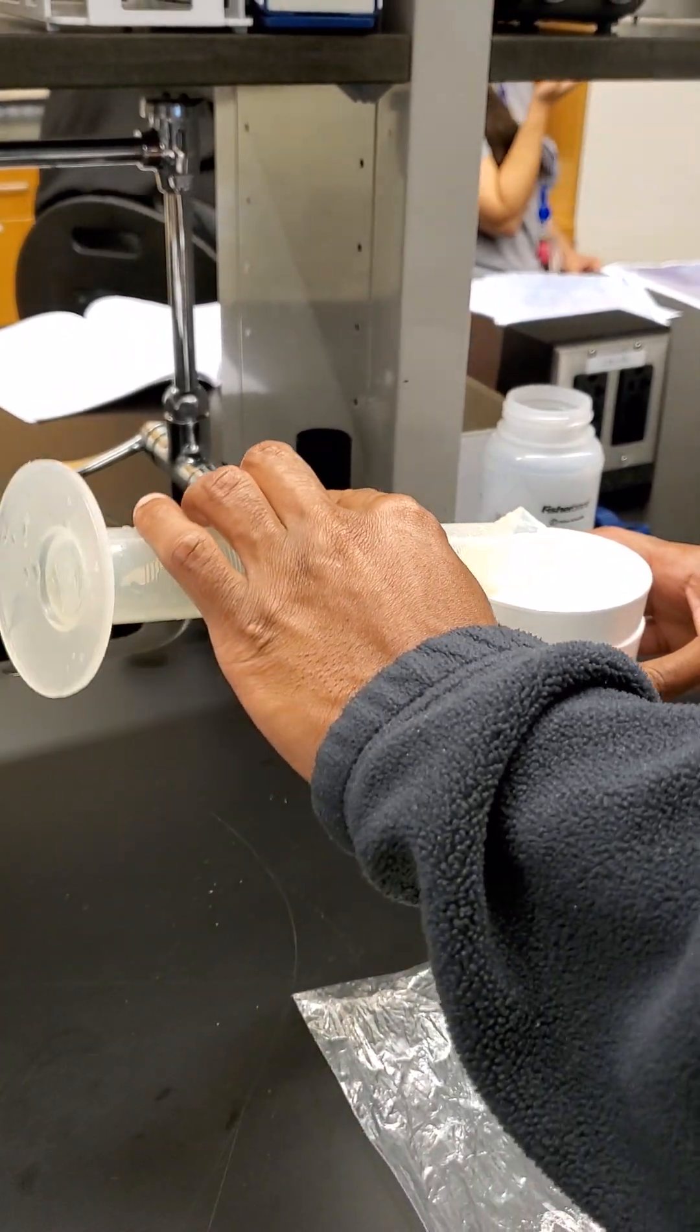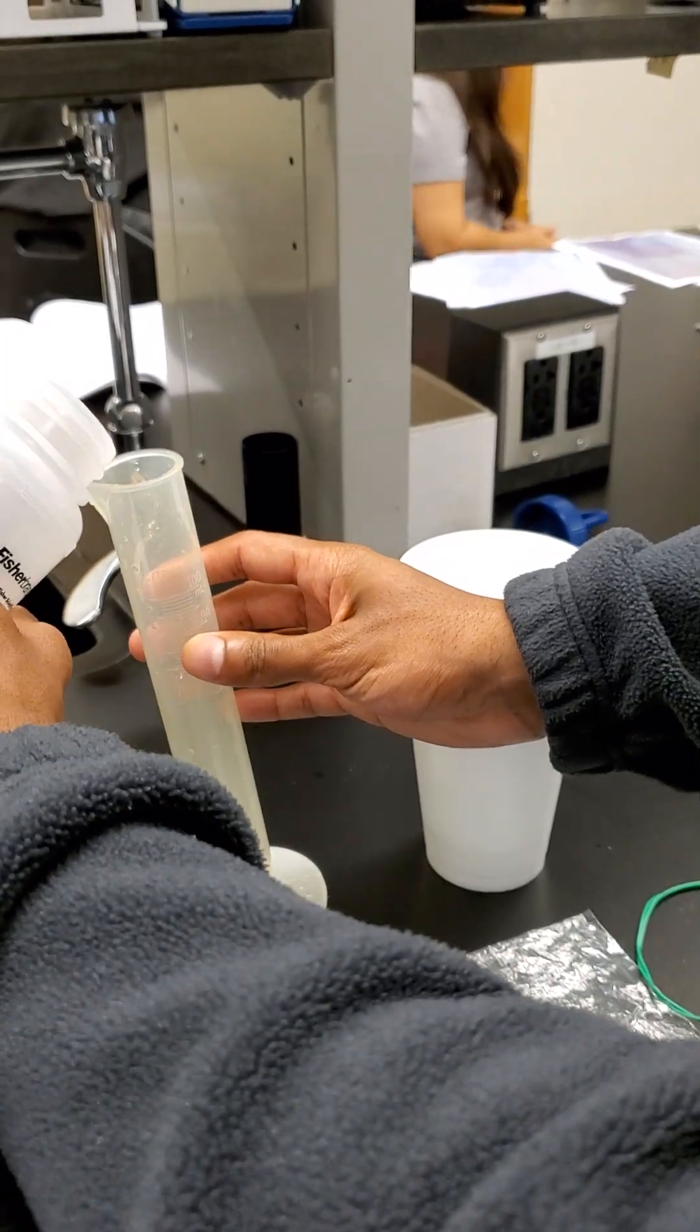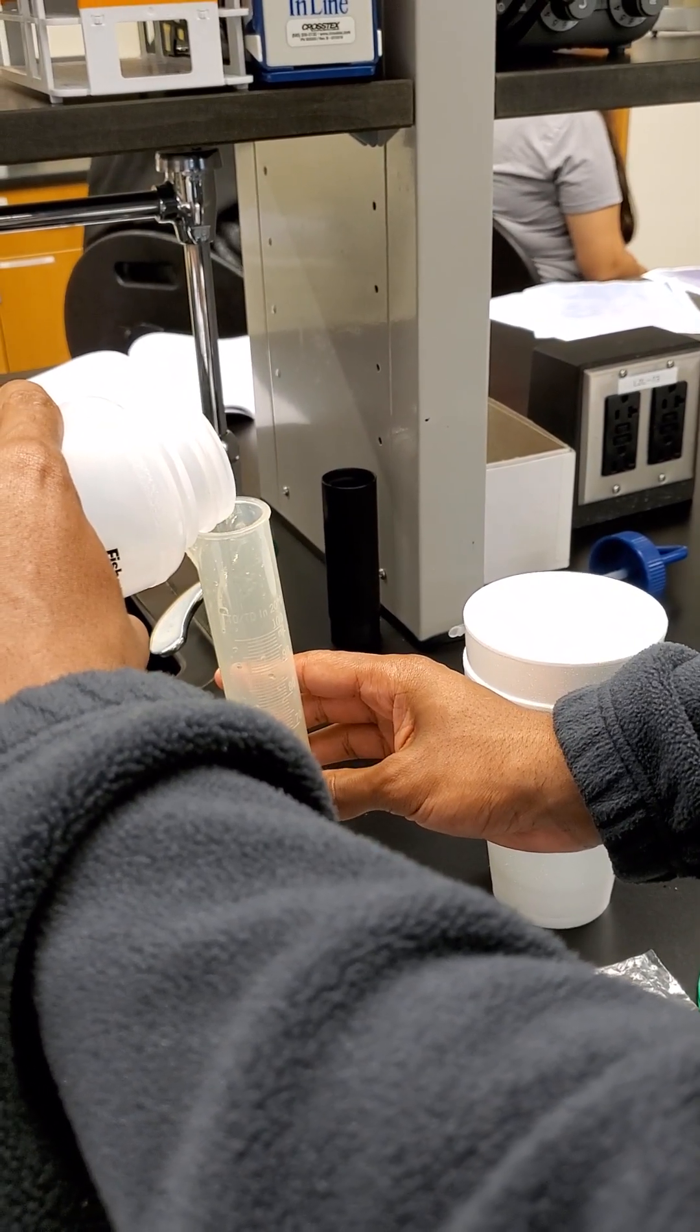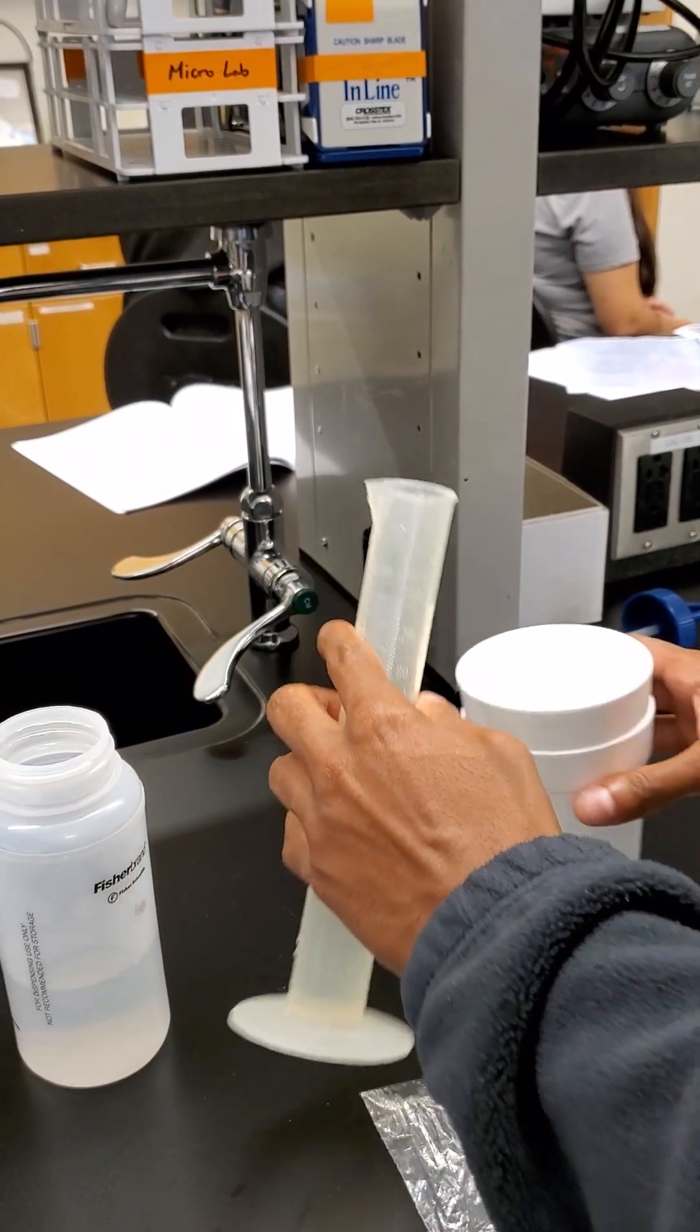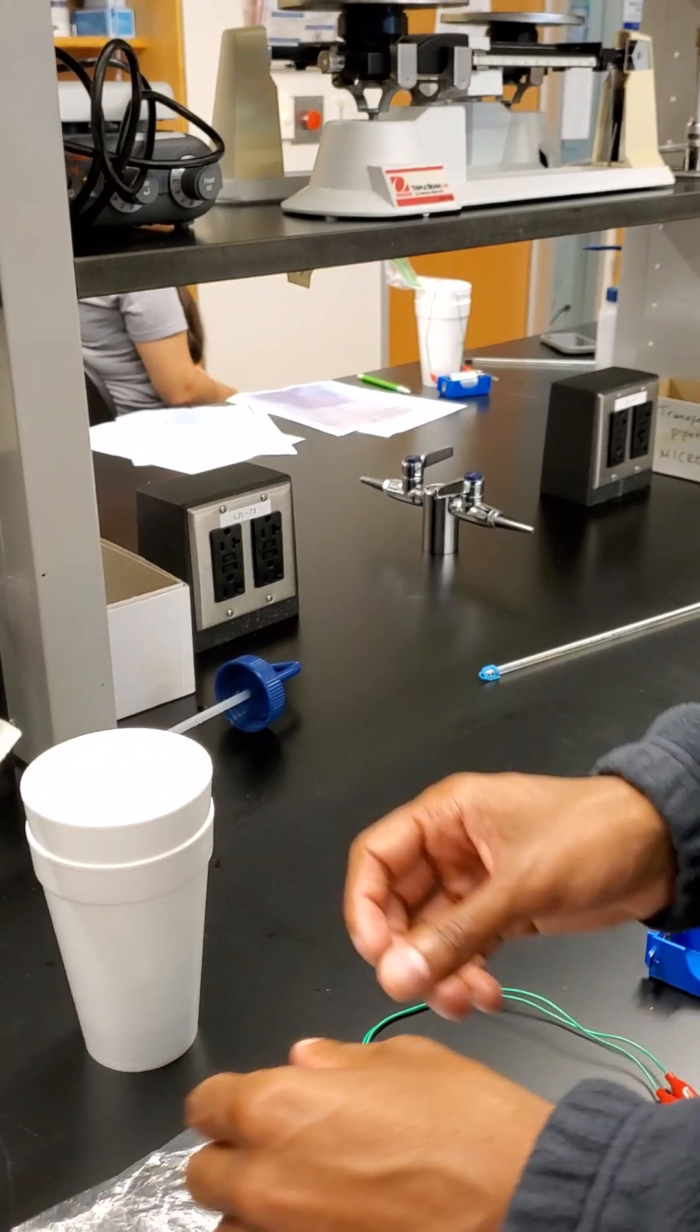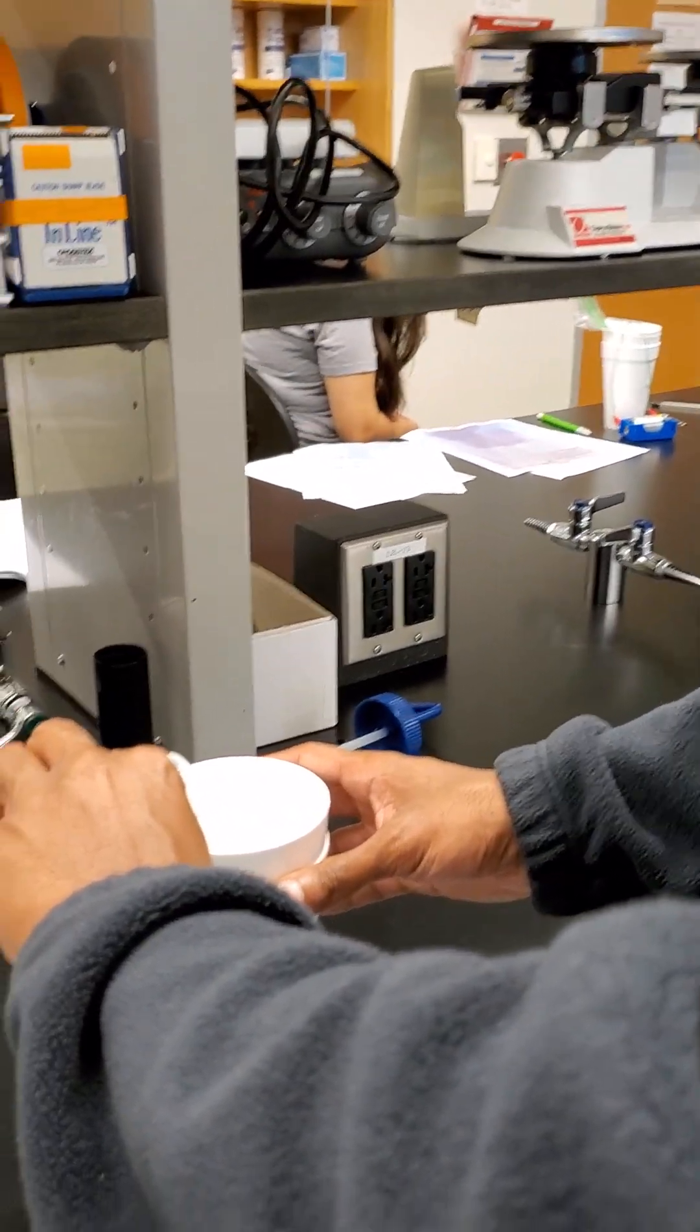So that was 100 milliliters, now he's measuring 50 more milliliters, so that the total amount of water that goes in the graduated cylinder, we use this beaker to pour it, is 150 milliliters.